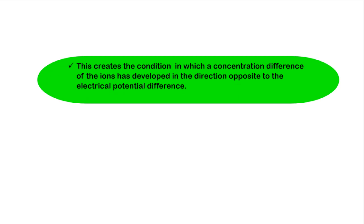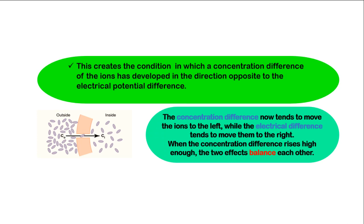This creates a condition in which the concentration difference of the ions has developed in the direction opposite to the electrical potential difference. The concentration difference now tends to move the ions to the left, while the electrical difference tends to move them to the right. When the concentration difference rises high enough, the two effects balance each other.